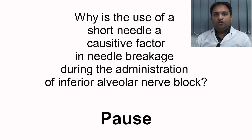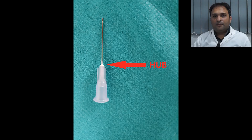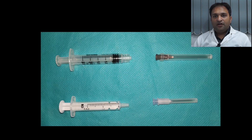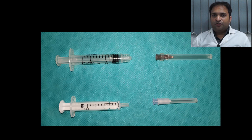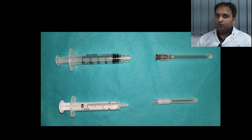Why is the use of a short needle a causative factor in needle breakage during the administration of inferior alveolar nerve block? The hub of the needle is the point of weakness in the needle design. A short needle will have to be inserted up to the hub to reach the target area, increasing the likelihood of breakage. It is therefore recommended that a long needle should be used.